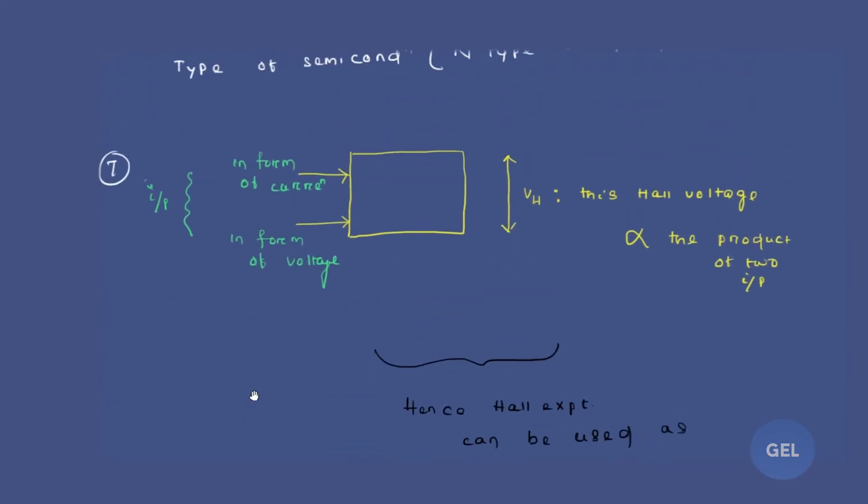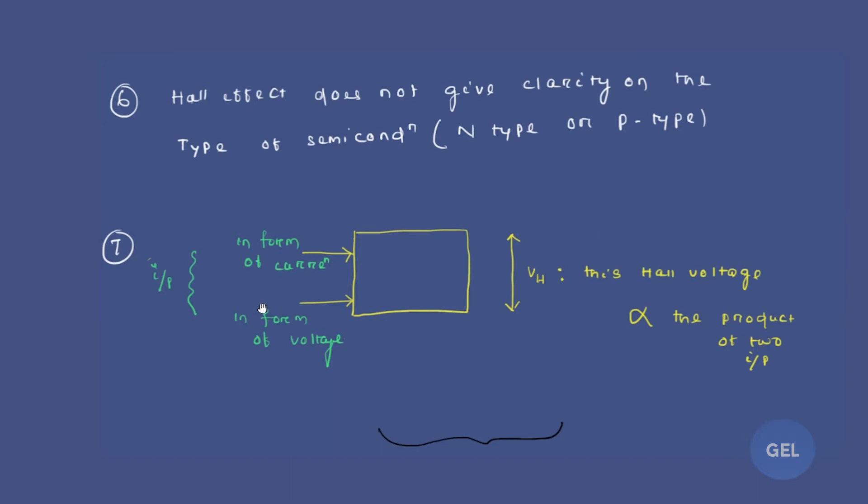Moving on to our next point, there are two very simple points. Hall effect doesn't give the clarity on the type of semiconductor. It doesn't matter what type of semiconductor it is, we don't get any kind of clarity from Hall effect. What type of semiconductor is this specimen that we're using on the transverse magnetic field? Whether it is an n-type or a p-type or an extrinsic semiconductor, we don't get any kind of clarity. So you can take it as a limitation.